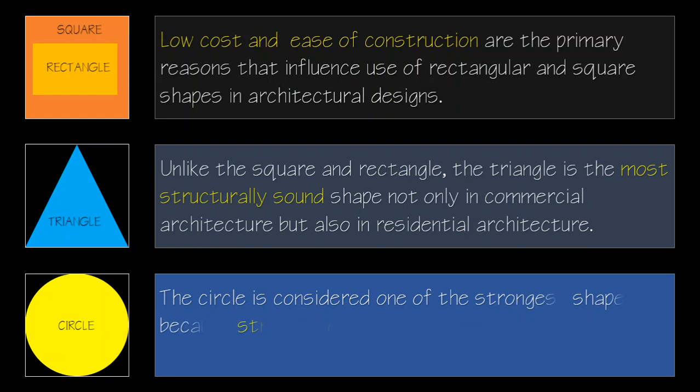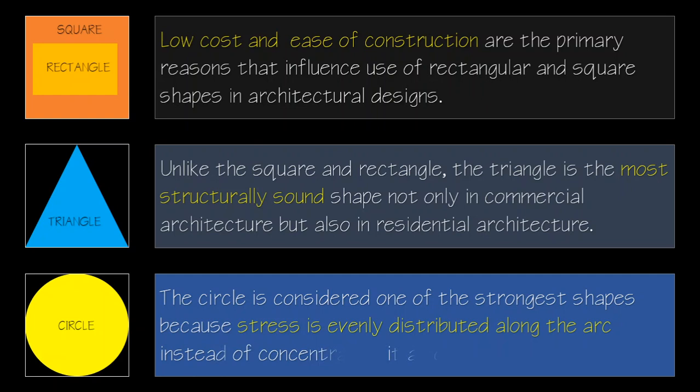For the triangle, unlike the square and rectangle, the triangle is the most structurally sound shape, not only in commercial architecture, but also in residential architecture. As for the circle, it is considered to be the strongest of the shapes because stress is evenly distributed along the structure instead of concentrating at one particular part.